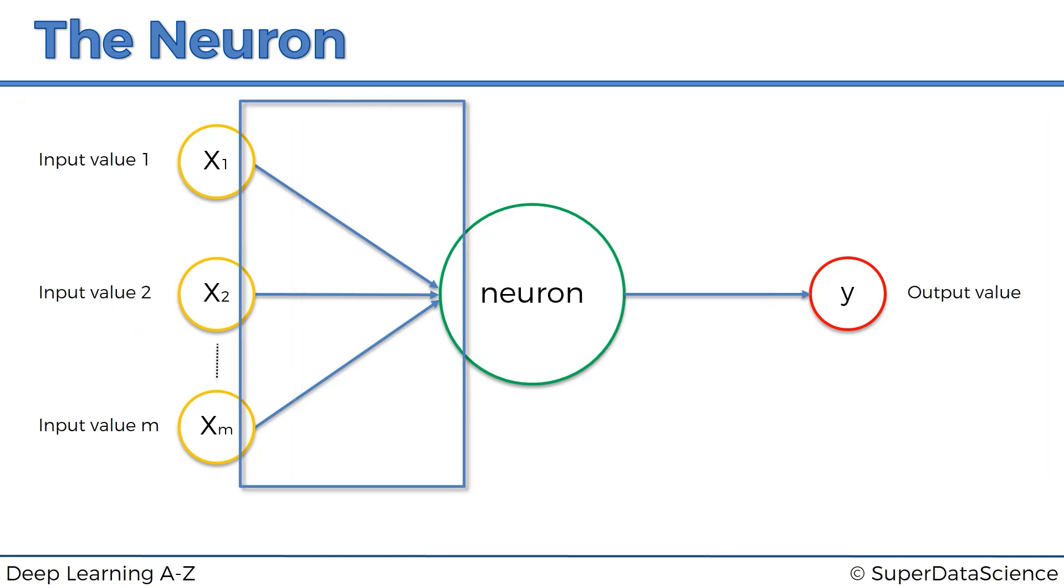Next thing that we want to talk about here are the synapses. Here we've got synapses, and they all actually get assigned weights. Weights, we're going to talk more about weights further down, but in short, weights are crucial to artificial neural networks functioning, because weights are how neural networks learn. By adjusting the weights, the neural network decides in every single case what signal is important, what signal is not important to a certain neuron, what signal gets passed along, and what signal doesn't get passed along, or to what strength, to what extent signals get passed along. So weights are crucial, and they are the things that get adjusted through the process of learning. Like when you're training on an artificial neural network, you're basically adjusting all of the weights in all of the synapses across this whole neural network.